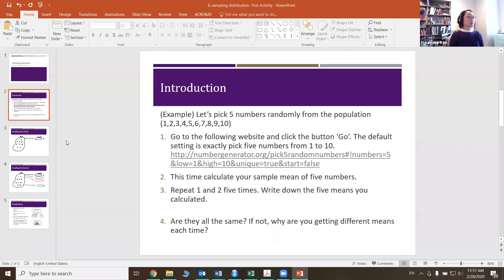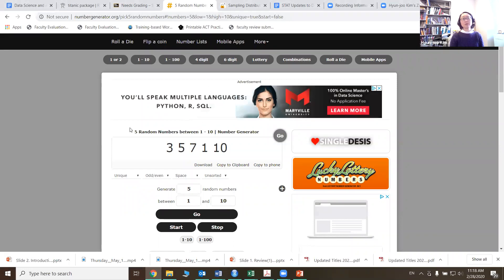For the activity, we want to think about picking five numbers, five random numbers from population 1 to 10. There are different ways that you can actually do this. Several different computer softwares will actually let you do this pretty quickly as well. But here, I just want to use this website. This website will actually let us do random sampling pretty quickly. So you just copy and paste this address into your browser and then you will see something like this.